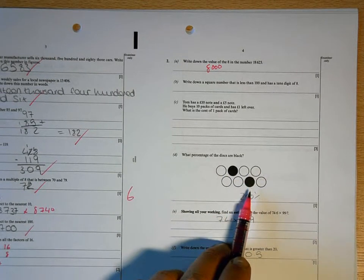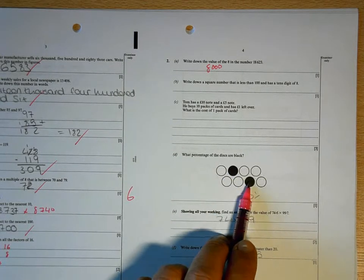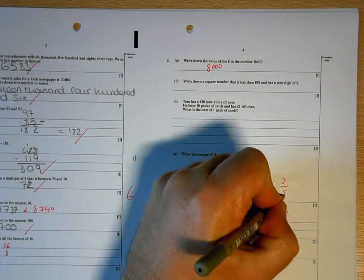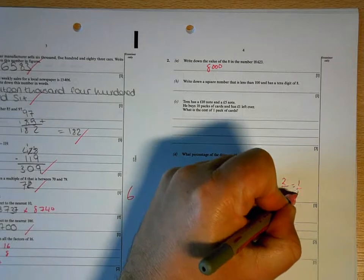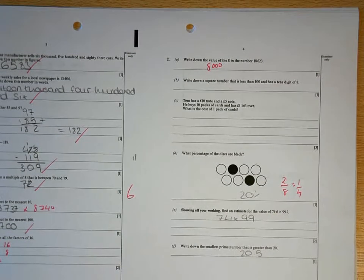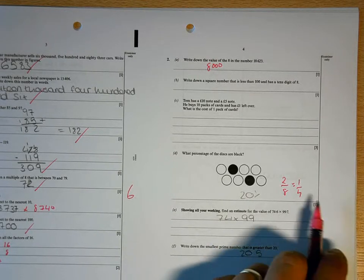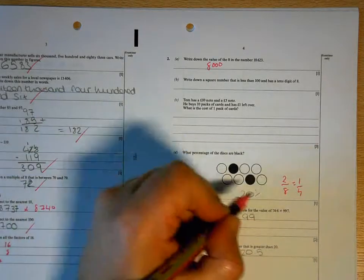This is something that we're going to be looking at next week. But what you've got there, if they asked you for a fraction, would be 2 out of 8. Now 2 out of 8 is the same as 1 quarter because you can divide both of those by 2. That's what we've been doing practicing this week. And then you should know it's a common equivalence. A quarter is the same as 25%.